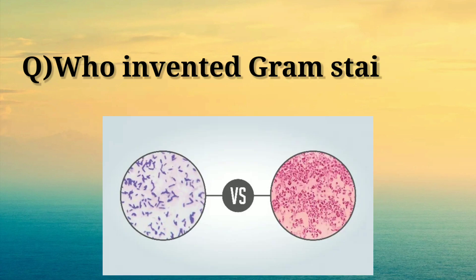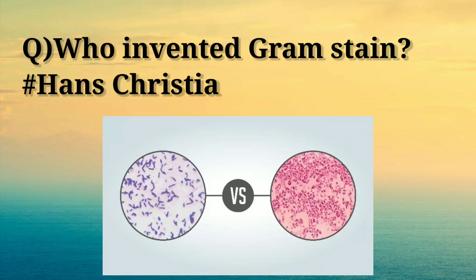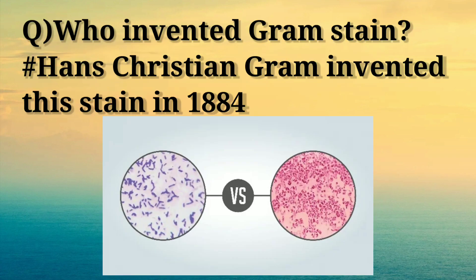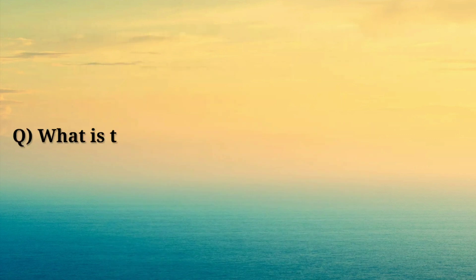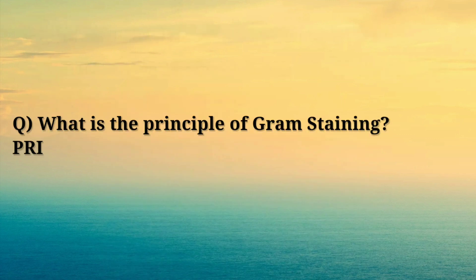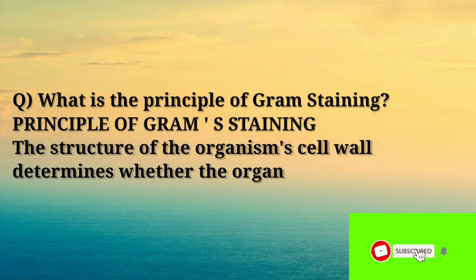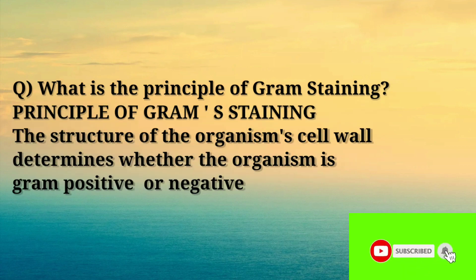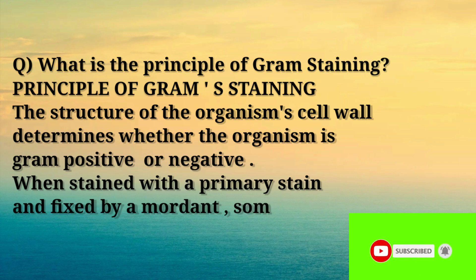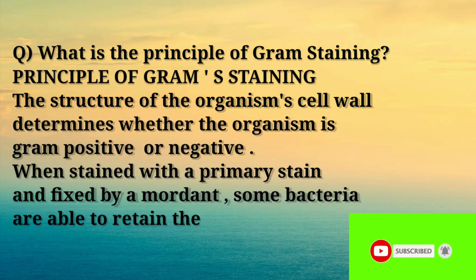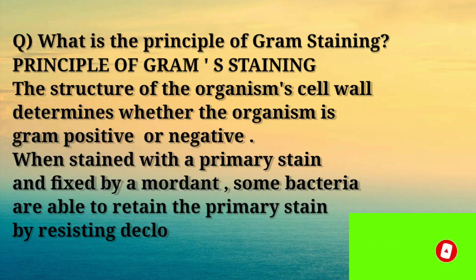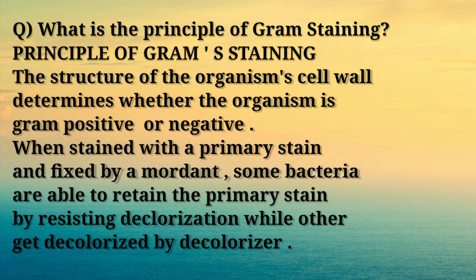Next: who invented gram stain? Answer: Hans Christian Gram invented this stain in 1884. Next: what is the principle of gram staining? The structure of the organism's cell wall determines whether the organism is gram positive or negative.